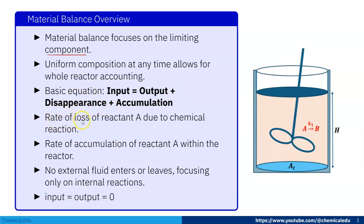So here rate of loss of reactant A due to chemical reaction. So here you consider that A is a reactant and B is the product. So A is converted to B.